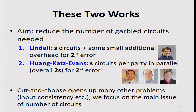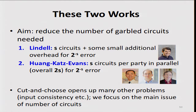In my paper, using s circuits plus some additional overhead I'll describe, we get error down to 2 to the minus s — this seems like the best you could even dream of. In the paper by Huang, Katz and Evans, they have s circuits going in each side, so each party constructs s circuits and evaluates s circuits. Overall they have 2s circuits with 2 to the minus s error, but the latency is similar because they work in parallel. There are a lot of other issues that arise with cut-and-choose, but the main focus is the correctness of the circuit, which can be dealt with as in the paper and the next talk.